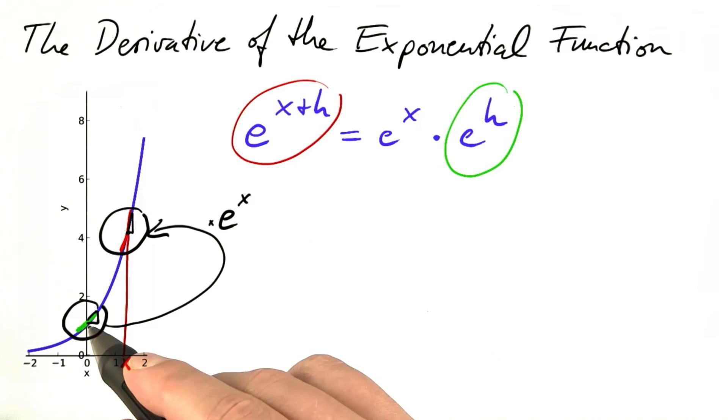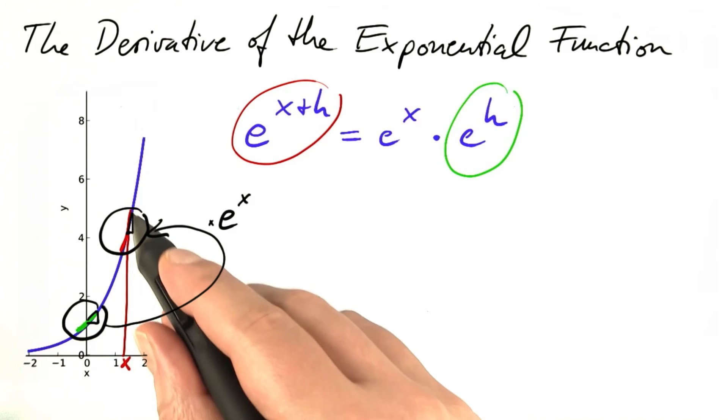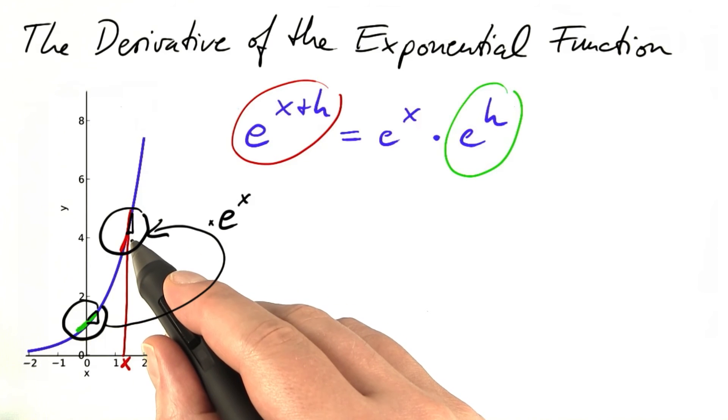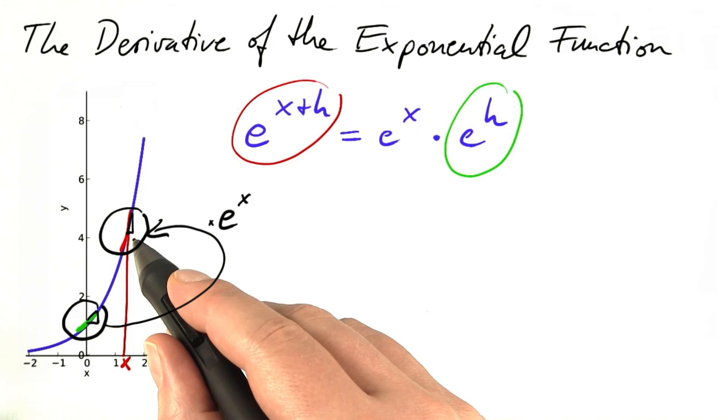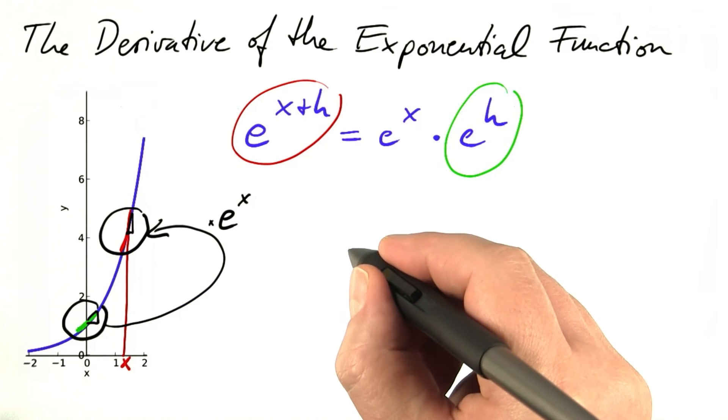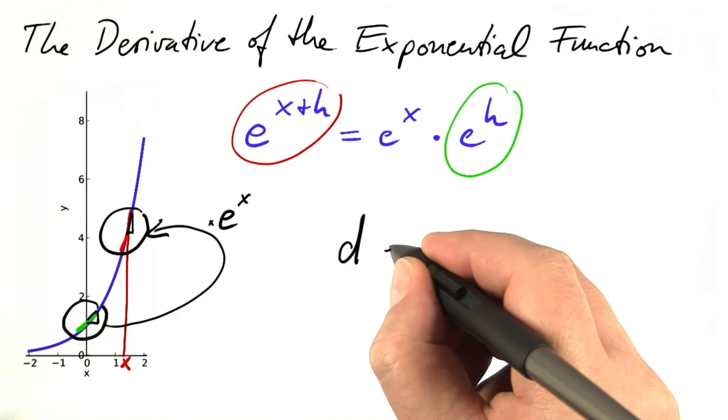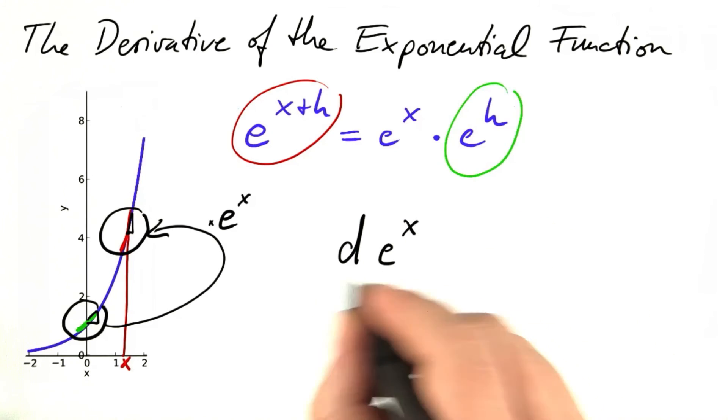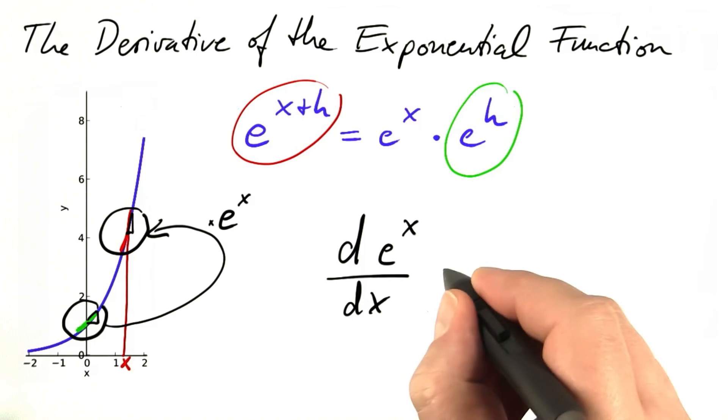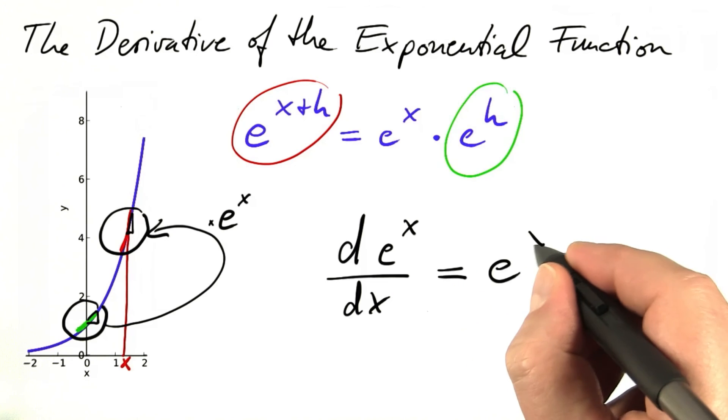We do know that the slope at the origin is 1, so this slope has to be e to the power of x times 1. It's the exponential function itself again. This is a fundamental result. The derivative of e to the power of x with respect to x equals e to the power of x.